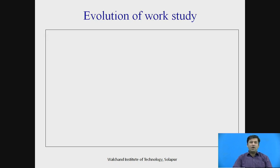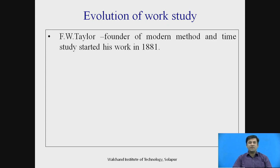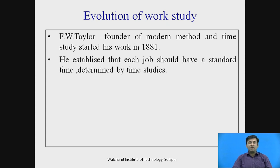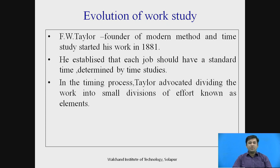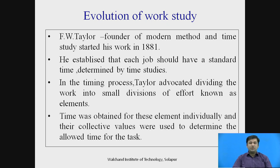How was work-study evolved? The basic work-study evolution started with F.W. Taylor, also known as the founder of modern method and time study, and he started his work in 1881. He established that each job should have a standard time determined by time studies. In the timing process, Taylor advocated dividing the work into small divisions of effort known as elements. Time was obtained for these elements individually and their collective values were used to determine the allowed time for the task.